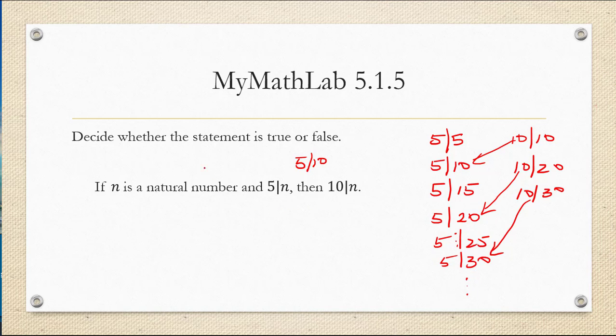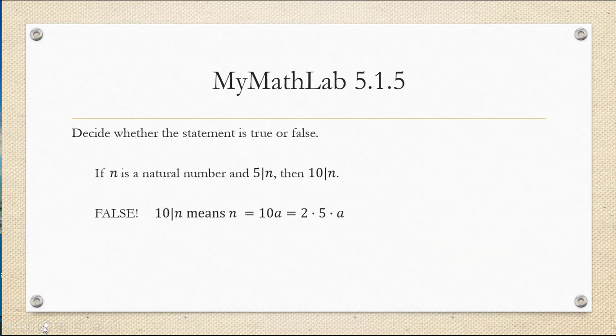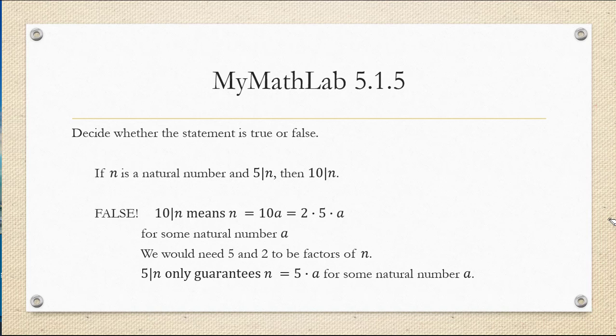So what has happened here? Well in the previous problem we had the order reversed. The question was more similar to if n is divisible by 10 then it's divisible by 5. That would work because 10 is the larger number, to say that 10 goes in guarantees that 5 does also. But not the other way around. As we can see there are definitely numbers that are divisible by 5 that are not divisible by 10. So in this case this would actually be false. The fact that 10 divides n means n is equal to 10a which is 2 times 5 times a. We would need 5 and 2 both to be factors of n. When we say that 5 divides n it only guarantees that n equals 5a for some natural number a. So 5 is a factor but not necessarily the 2.